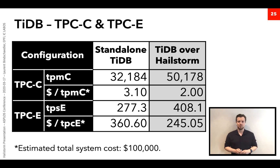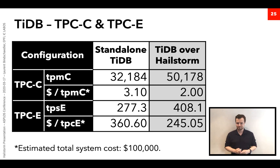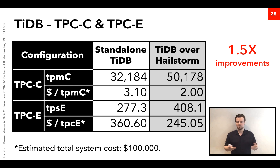Finally, for TiDB — a SQL-compatible distributed database developed by PingCAP — we consider the industry-standard TPCC and TPCE benchmarks, comparing standalone TiDB against TiDB running on Hailstorm. We measure the performance metric of each benchmark as well as the dollar-to-performance ratio. Hailstorm improves throughput for TiDB by 1.5x, or equivalently offers cost reductions of approximately 50%.